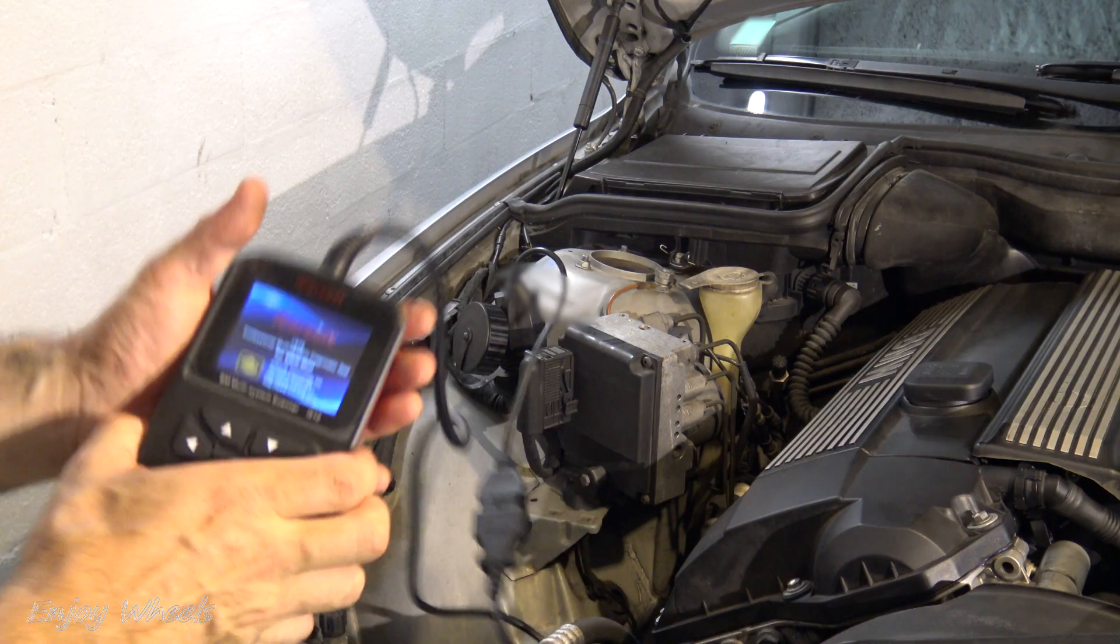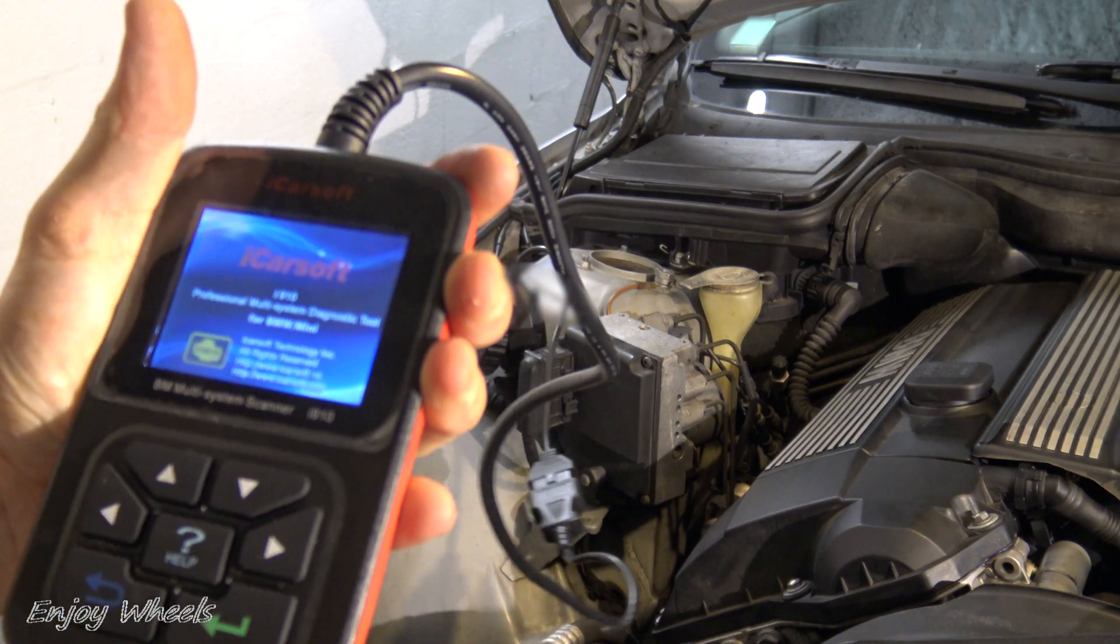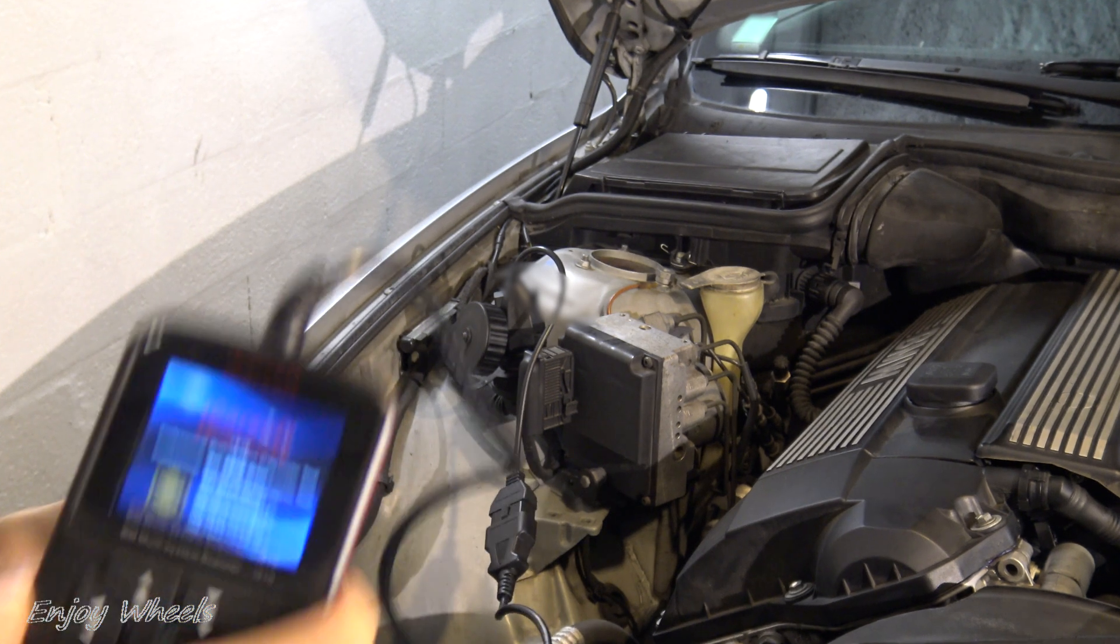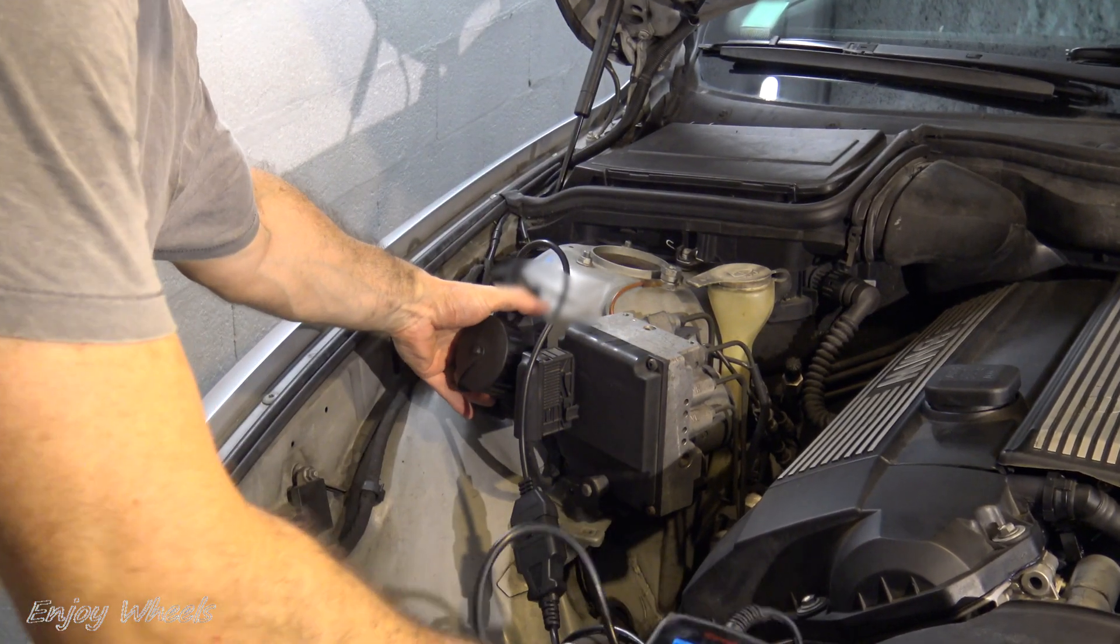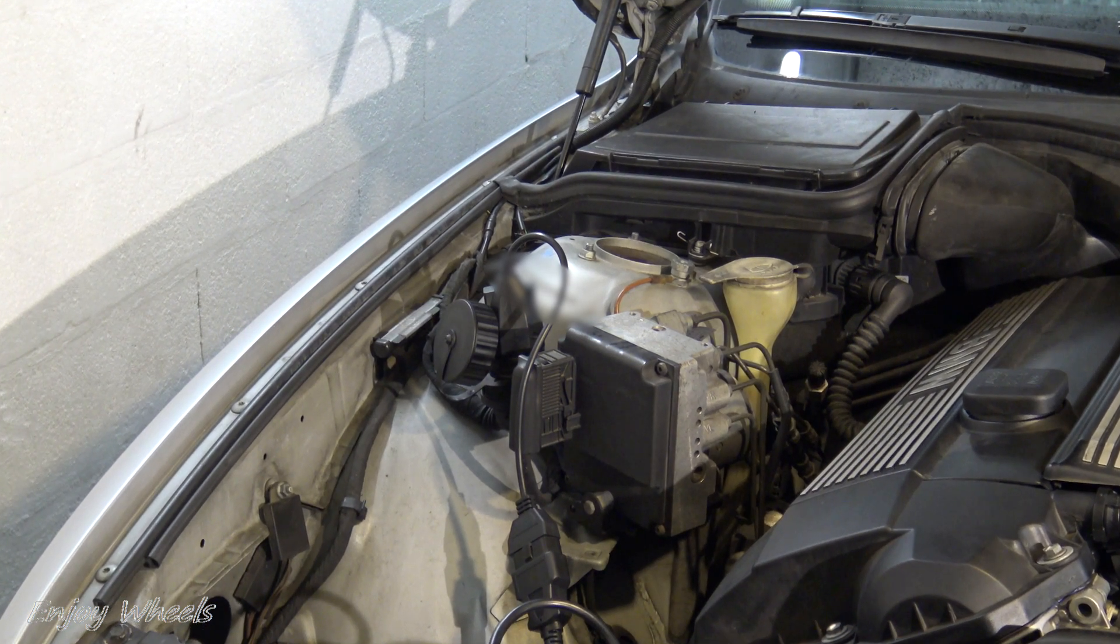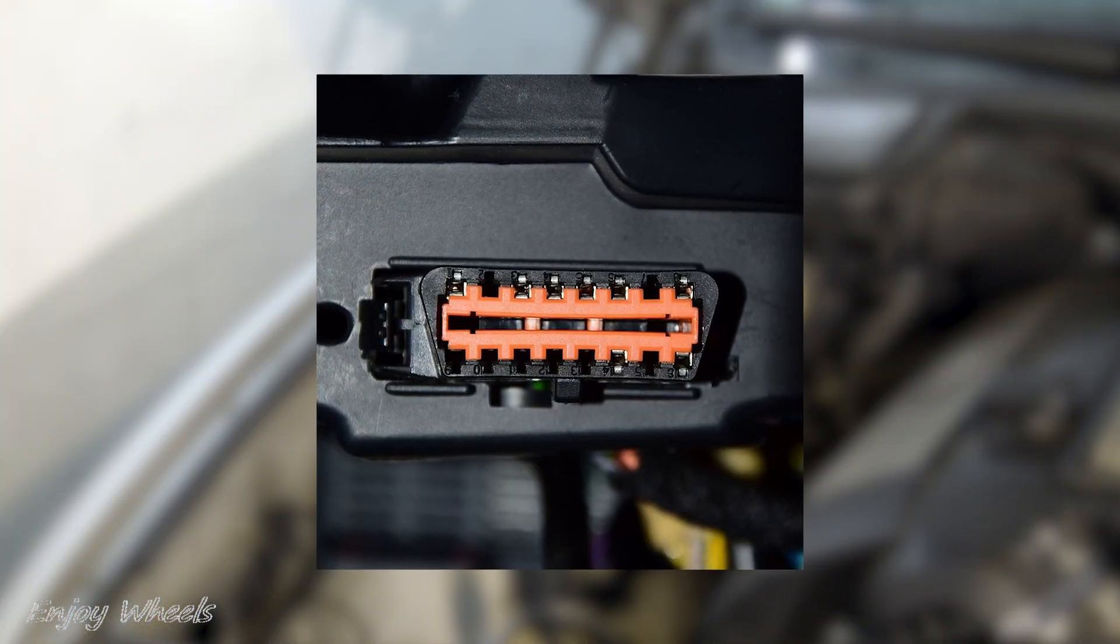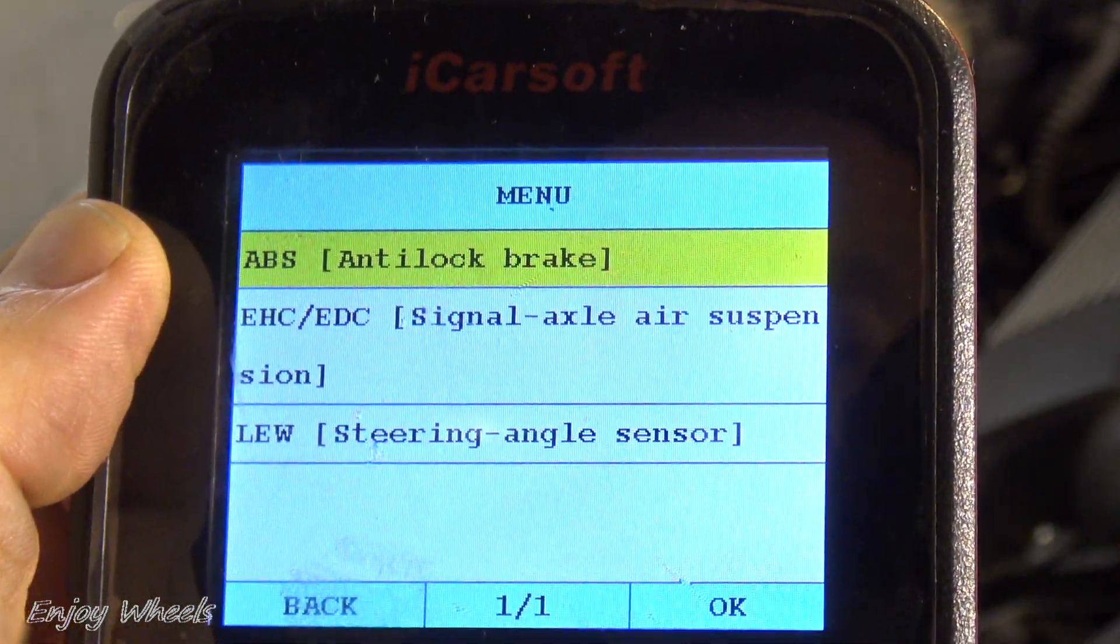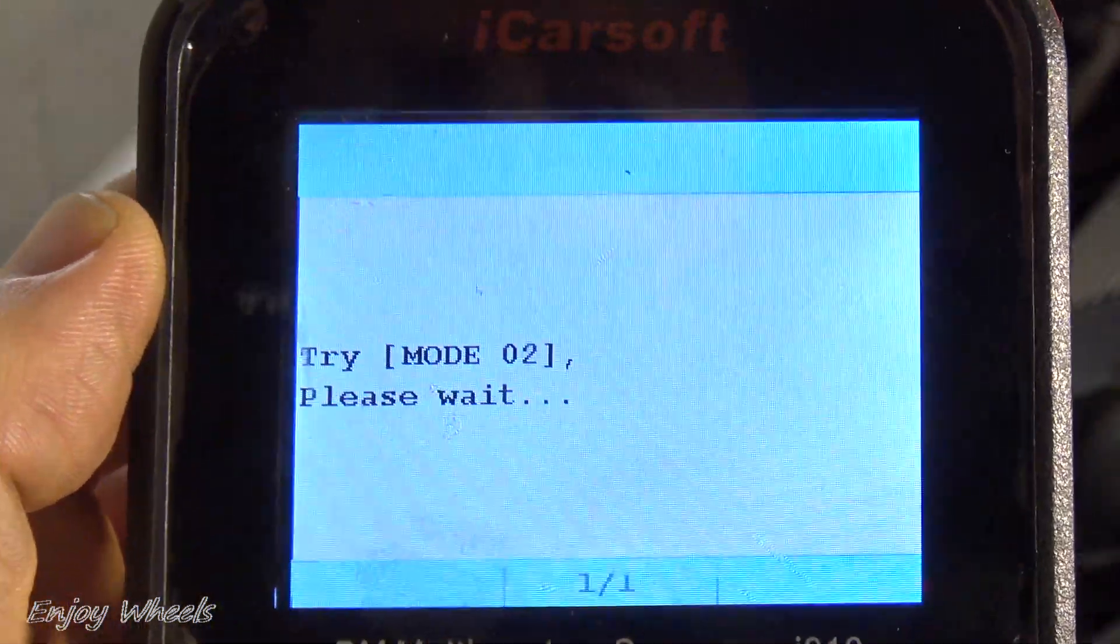The first thing to do when you have a warning light on the instrument panel is to read the fault codes. On my car it's a round OBD1 plug under the hood, but on most cars it's an OBD2 plug in the passenger compartment. I plug in and switch on the ignition, then start reading the fault codes.